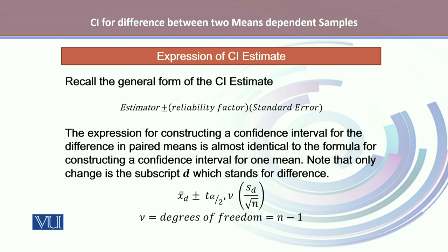To calculate the confidence interval, we start with the general form: estimator plus or minus the reliability factor multiplied by the standard error of the estimate. The expression for constructing a confidence interval for the difference in paired means is almost identical to the formula for constructing a confidence interval for one mean — note that the only change is the subscript D, which stands for difference. Here, X-bar D represents the average difference before and after. In the standard deviation, you will see SD, which is the standard deviation of the differences, and SD over the square root of N gives us the standard error of the sampling distribution of the difference between means. T alpha by 2 is the reliability factor from the t-distribution, where N is the degrees of freedom.